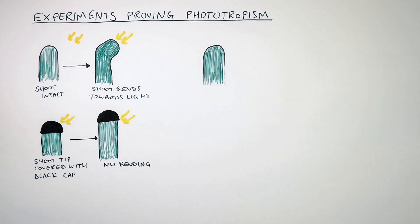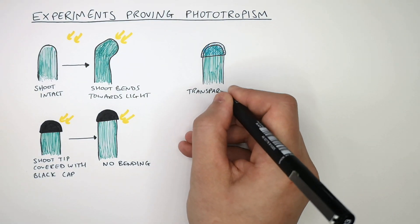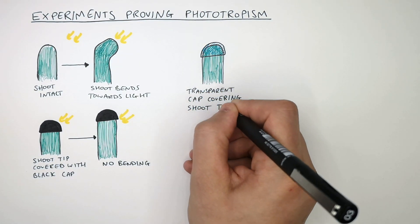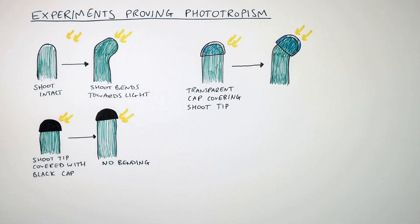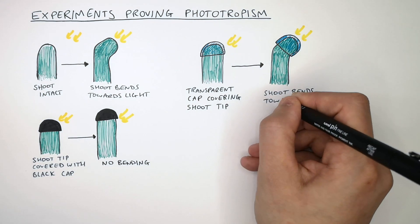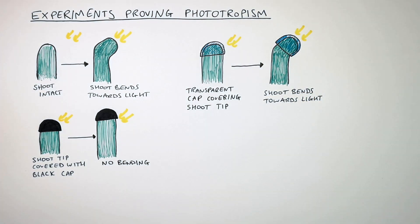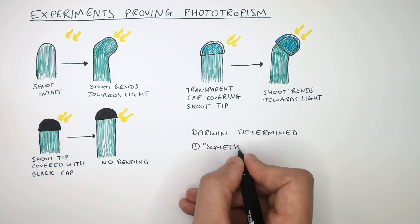In the next experiment, a transparent plastic cap is placed on the shoot tip. With a transparent cap covering the shoot tip and a directional light source added, the shoot is going to grow towards the light — there will be bending in the shoot. This shows that auxins are sensitive to light and will move down to the shaded region of the shoot, causing the cells in the shaded region to grow quicker than the non-shaded region.